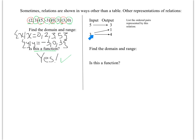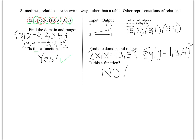This next thing is called a mapping, where input shows all domain values and output shows all y values. To list the ordered pairs, you follow the arrows: (5, 3), (3, 1), and (3, 4). Write those ordered pairs, then find the domain and range using such that notation, and decide if it's a function. The answer is no — it is not a function because three is paired with both one and four, making it a cheater.